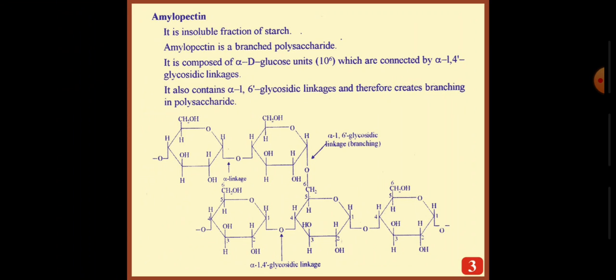Amylopectin is the insoluble fraction of starch. Amylopectin is a branched polysaccharide composed of alpha-D-glucose units, which are connected by alpha-1,4 glycosidic linkages. It also contains alpha-1,6 glycosidic linkages and therefore creates branching in the polysaccharide.